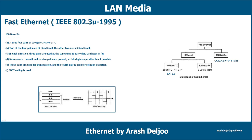Encoding in 100Base-T4 is more complicated — it uses 8B6T encoding, meaning 8 binary and 6 ternary. Since this implementation uses category 3 UTP, each twisted pair cannot easily handle more than 25 megabits. With one pair switching between sending and receiving, three pairs of UTP category 3 can handle only 75 megabits. Therefore, it requires an encoding scheme that converts 100 Mbps to a 75 megabit signal.